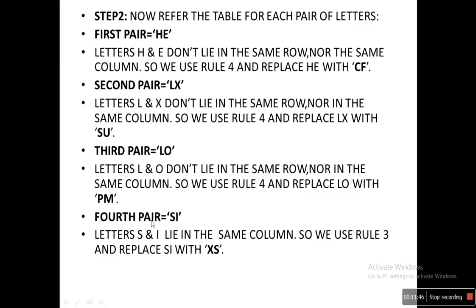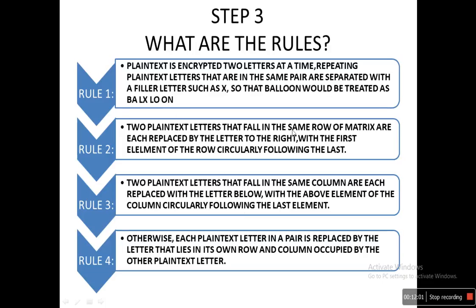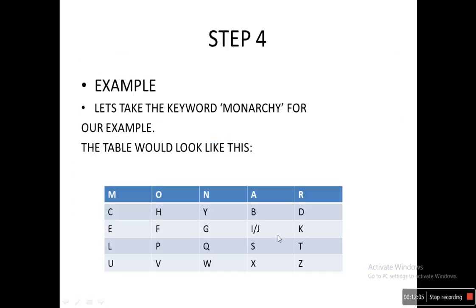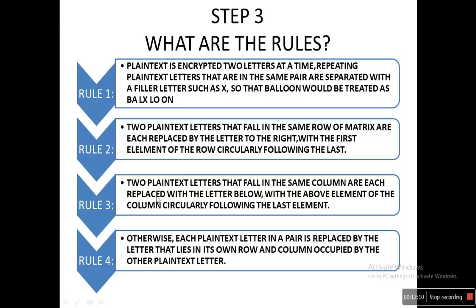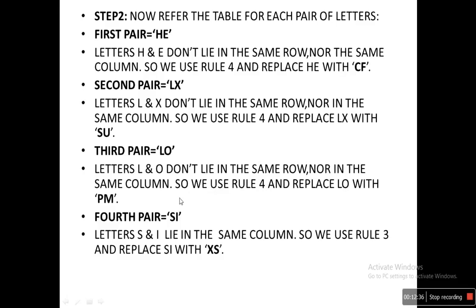Fourth pair: S and I. Letters S and I lie in the same column. So we use rule 3: two plain text letters in the same column are each replaced by the letter below them. S is replaced by X (the letter below S in that column), and I is replaced by S (the letter below I in that column). So SI is replaced with XS.